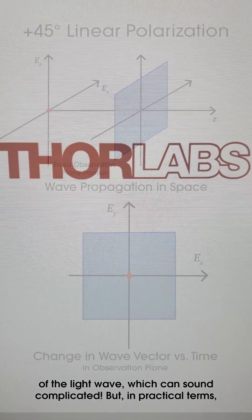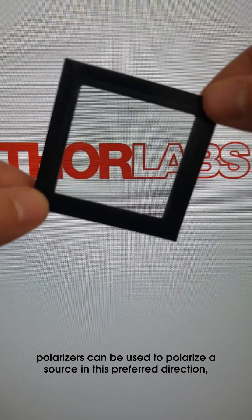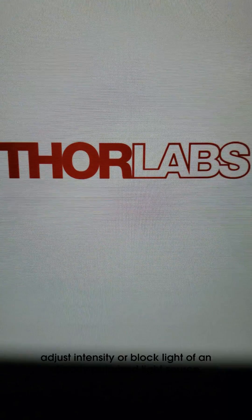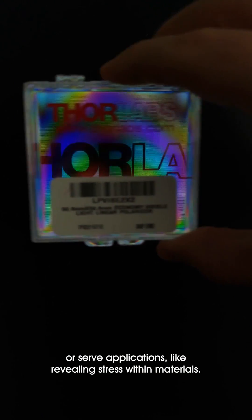But in practical terms, polarizers can be used to polarize a source in this preferred direction, adjust intensity or block light of an already polarized light source, or serve applications like revealing stress within materials.